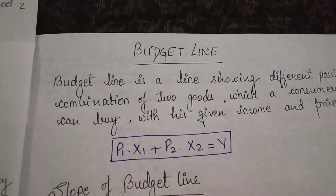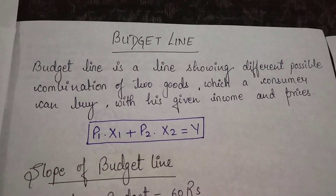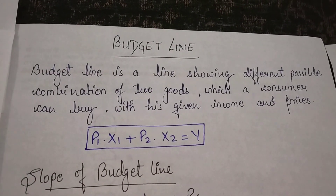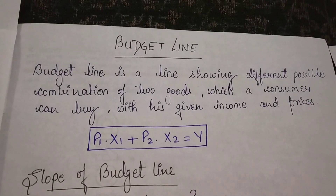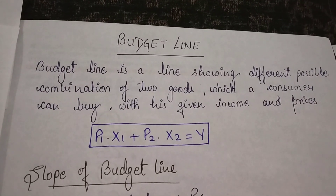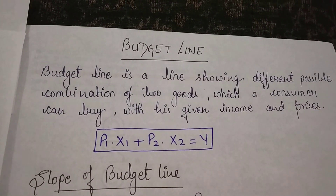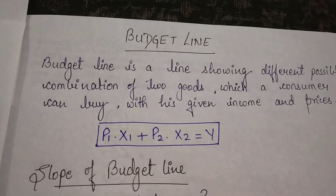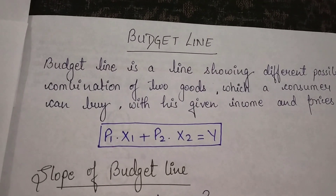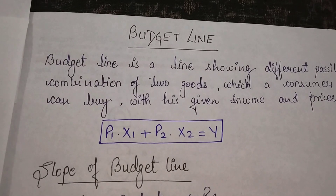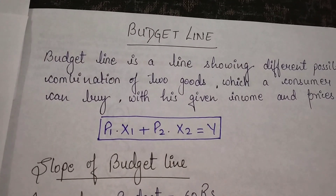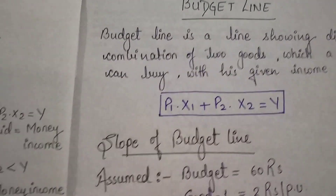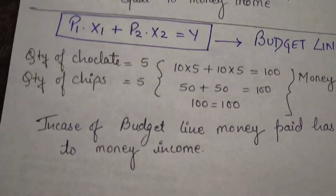The next topic is budget line. What is budget line? Budget line is the total money spent on the combination of two goods which has to be equal to the given income or money income. The equation is p1 into x1 plus p2 into x2 is equal to y.